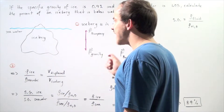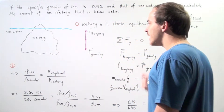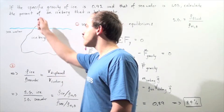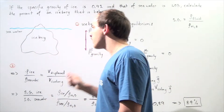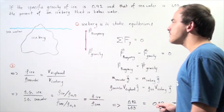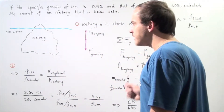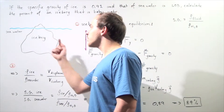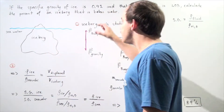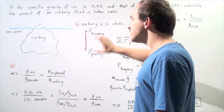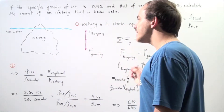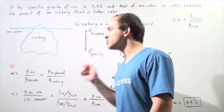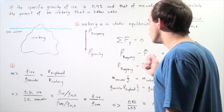We have two forces acting on the iceberg: the force of gravity, which is pulling the iceberg to the bottom of the ocean, and the buoyant force, which is acting to push the iceberg out of the water. These two forces must have the same exact magnitude because our object is assumed to be in static equilibrium.